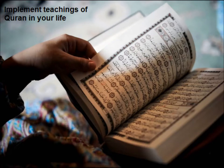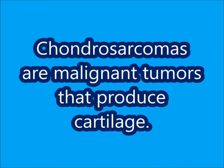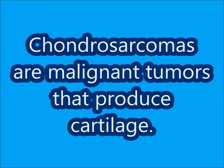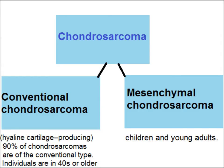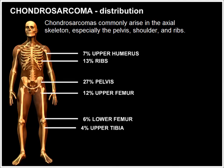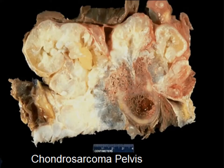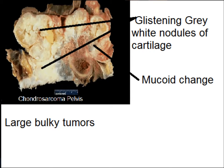Chondrosarcomas are malignant tumors that produce cartilage. They are divided into two types: conventional chondrosarcoma, which is hyaline cartilage producing, more common, and occurs in older age groups; and mesenchymal chondrosarcoma, which occurs in children and younger age groups. The pelvis is the most common site. This is a tumor showing a bulky mass arising from the pelvis.